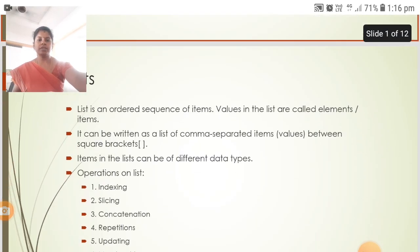In this we are going to see about lists. A list is an ordered sequence of items. Values in the list are called elements or items. It can be written as a list of comma-separated items between square brackets.